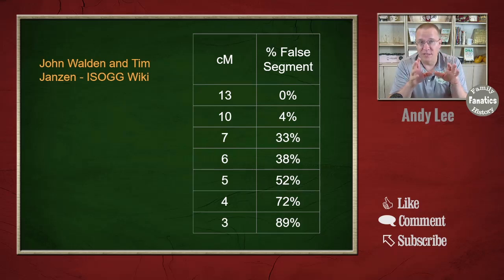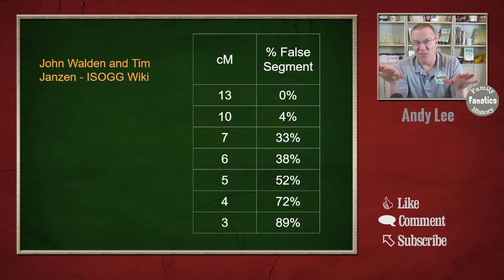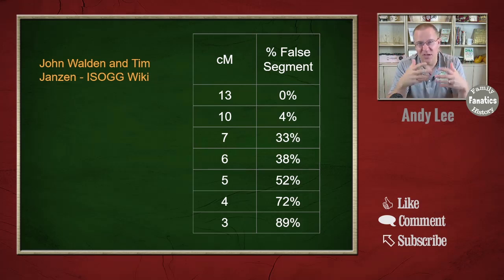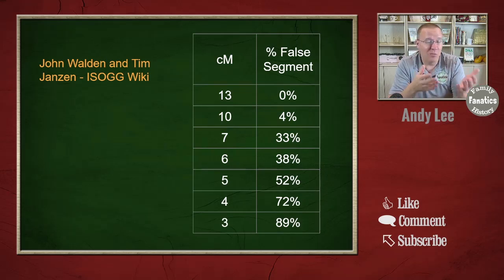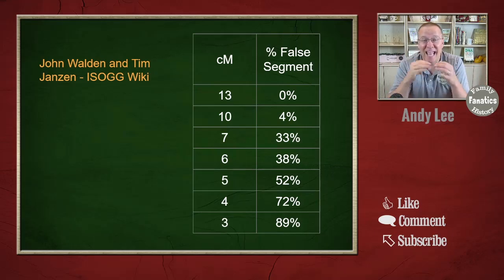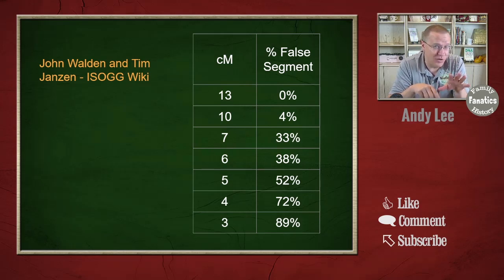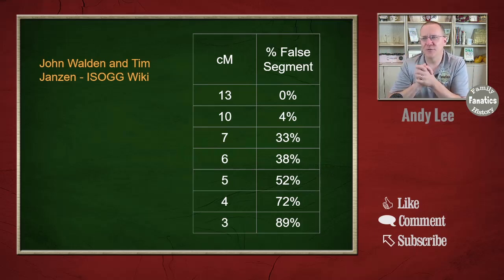What they found is that at around 13 centimorgans there are really no false segments. But as you go progressively lower, false segments start to increase. At 10 centimorgans it's only about four percent, which is still really low. But by the time you get to seven centimorgans it's almost a third — really a third — of all segments are false segments. And it gets progressively worse down to three centimorgans, where 89 percent of those segments are false.